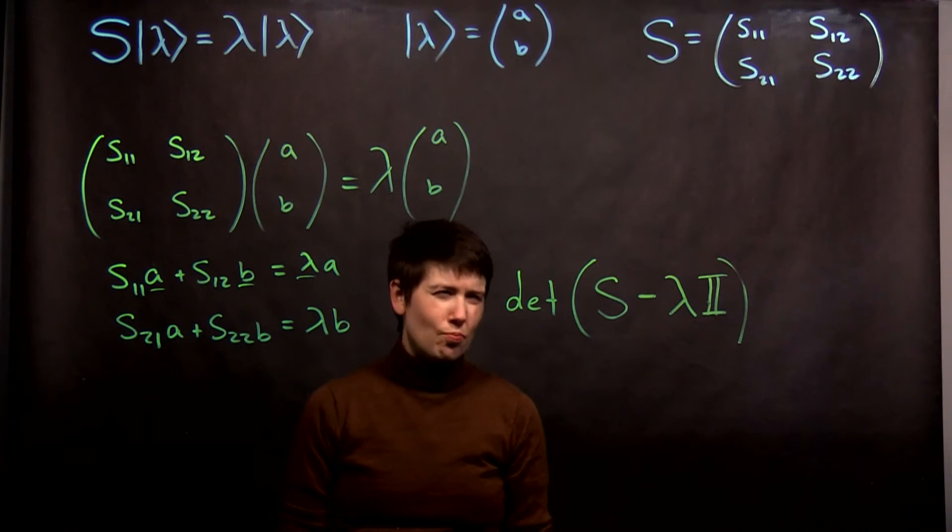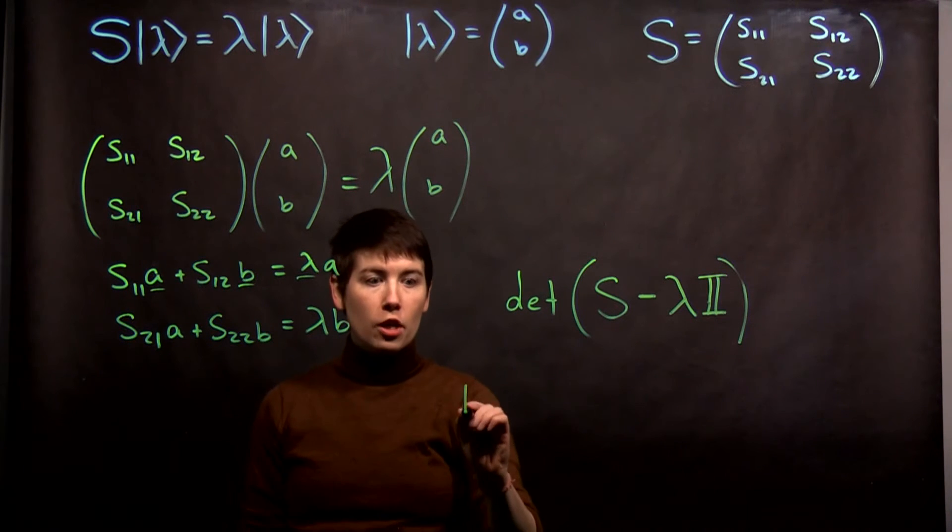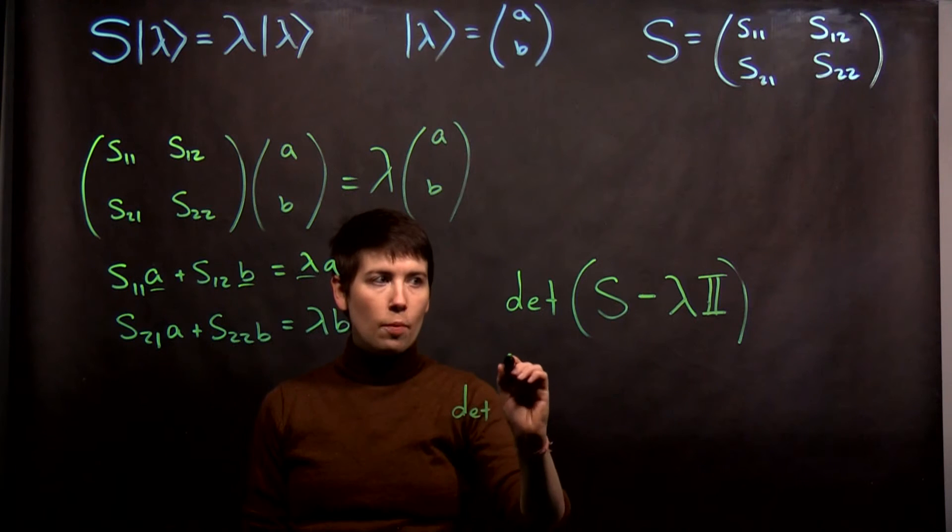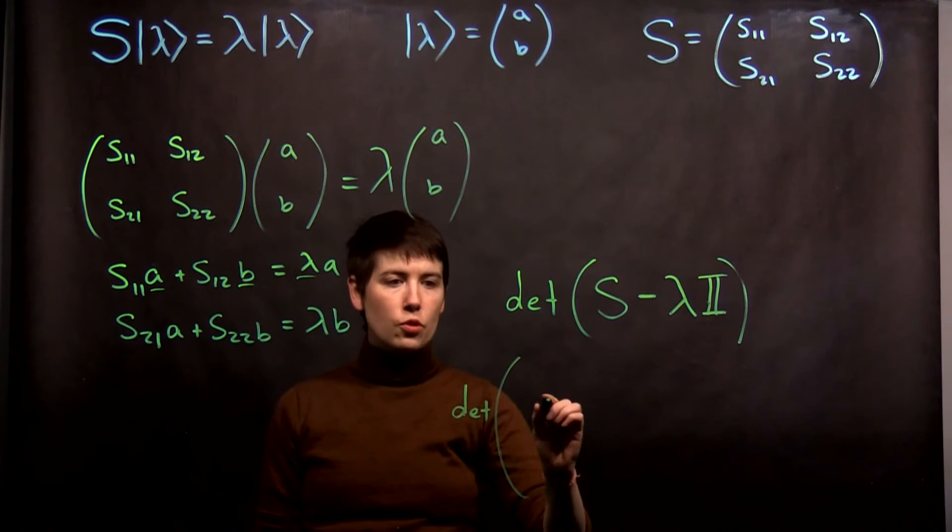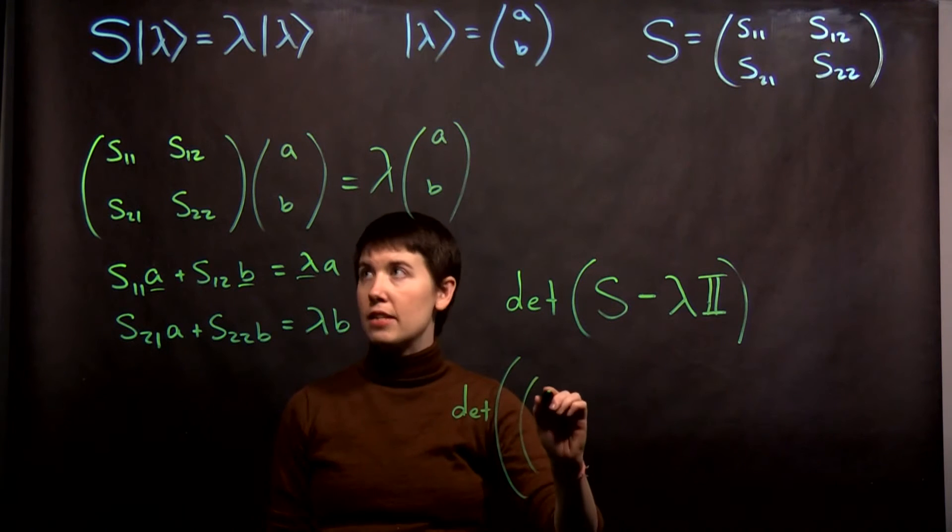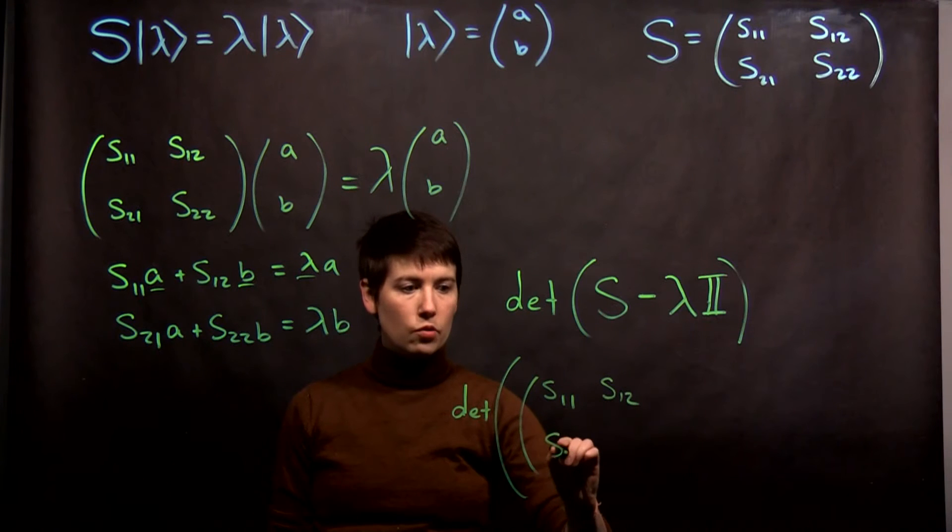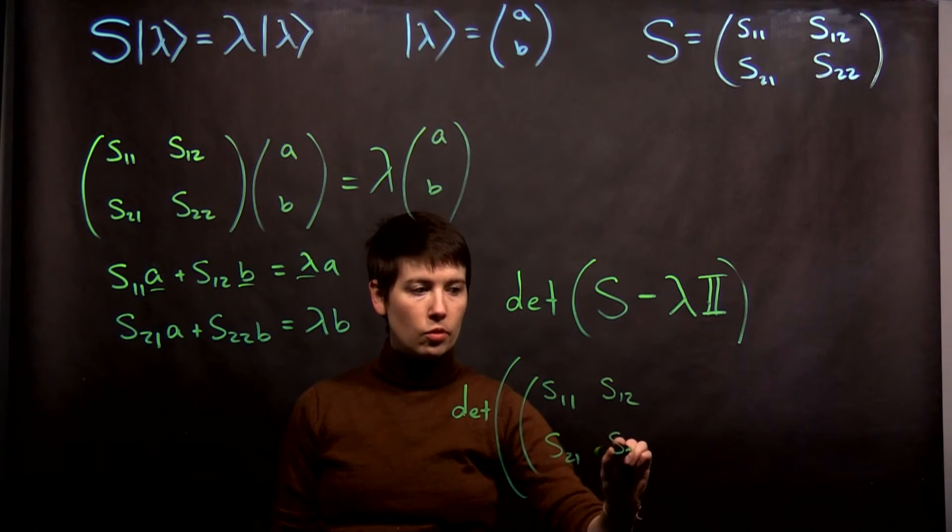That looks kind of complicated, let me write that in a different way. We're going to be looking for the determinant of, and again, S12, I'm going to write this as nested parentheses. So we have S11, S12, S21, S22.